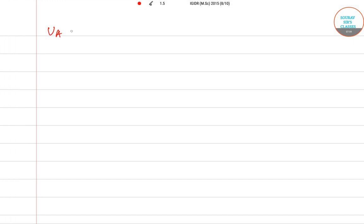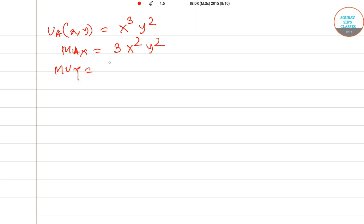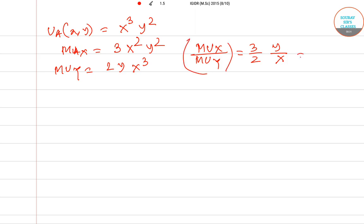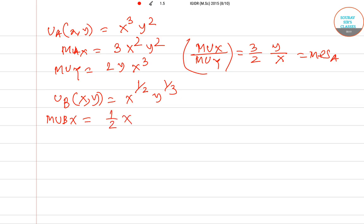The utility of A is U_A(x, y) = x³y². Taking partial derivatives: MU_x for A is 3x²y² and MU_y is 2y·x³. The MRS equals 3/2 · y/x for consumer A. For consumer B the utility function is x^(1/2) · y^(1/3). Taking the partial derivatives similarly, we derive MU_x and MU_y for B as well.